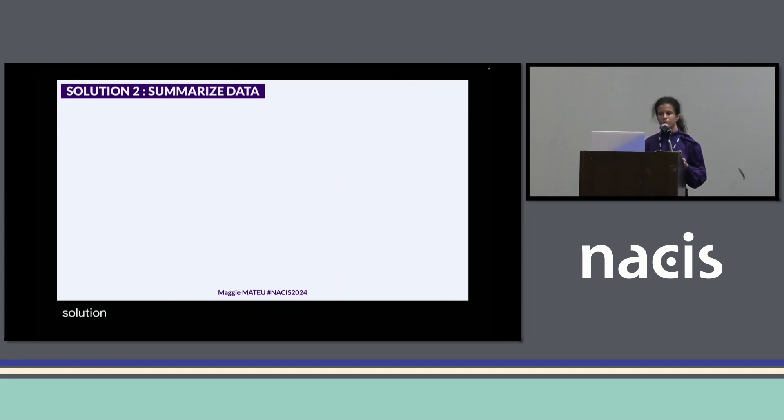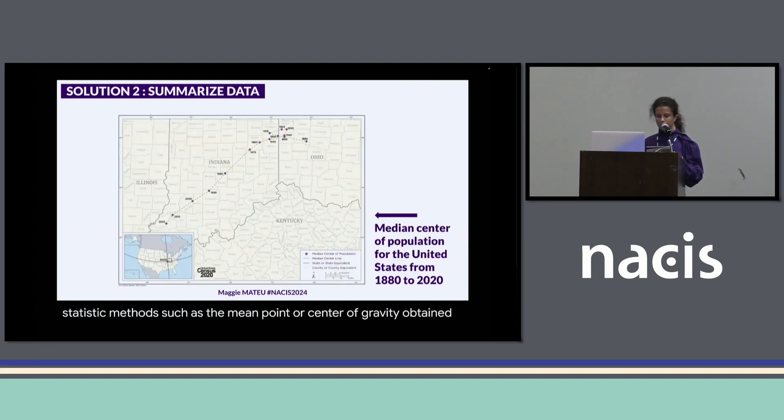The second solution would be to summarize data with good old statistic methods, such as the mean point or center of gravity, obtained by averaging the coordinates of the points considered. Here we have an example illustrating the major stages of the spread of population in the United States. As far as this solution was great to be used here, since we had to summarize the distribution of population for many years, it might not be the best tool to use when we have just one dataset for one year. This solution maybe gives us a map that is way too simple and that forgets a lot of things.